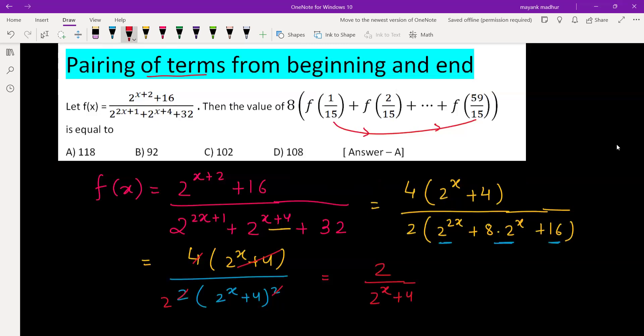So what is the sum of these two inputs, 1/15 and 59/15? It's 4 basically. So if you're calling this x, the other one is 4 minus x. Let's find f(4 - x) so that we can get the value of summation of these two.